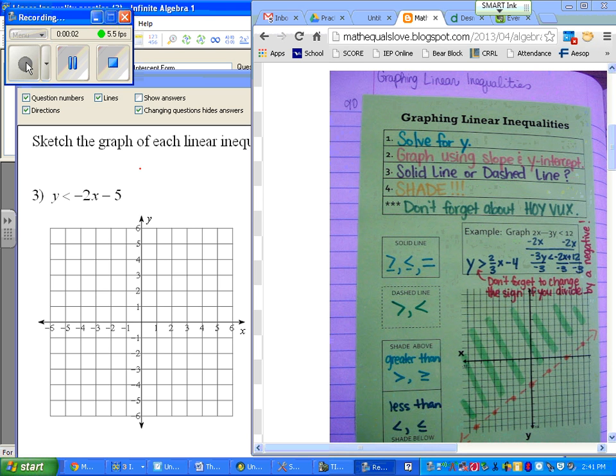Our third example is graphing y is less than negative 2x minus 5. Step number one asks you to solve for y. y is already by itself, so we don't have to do anything.